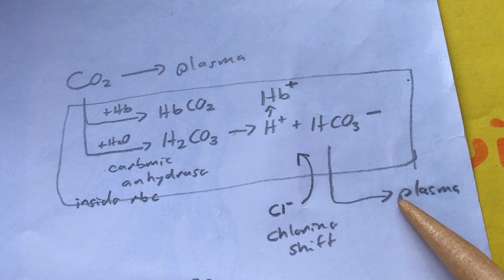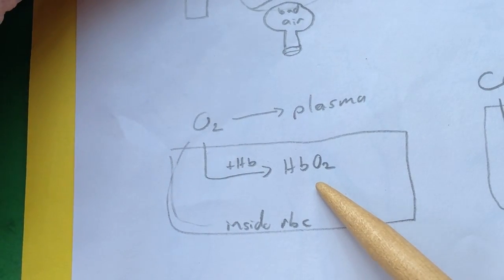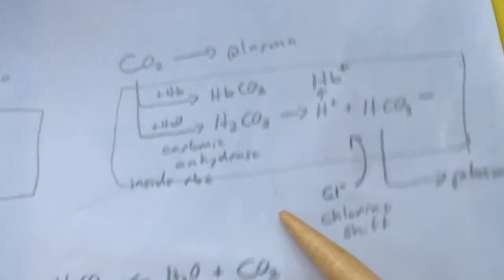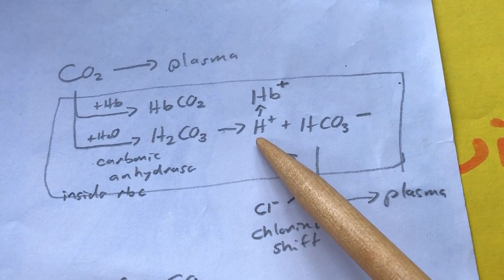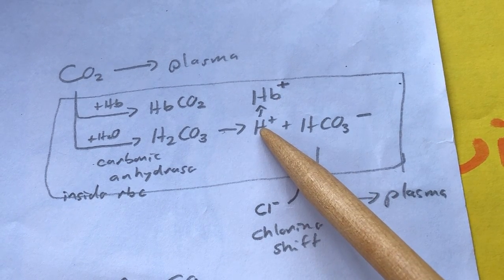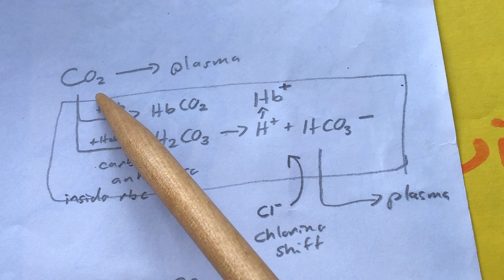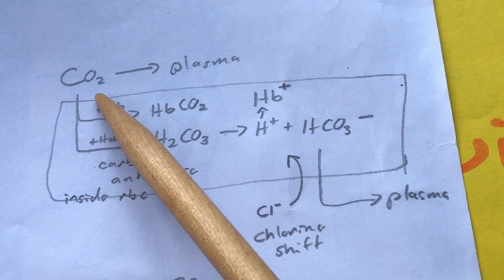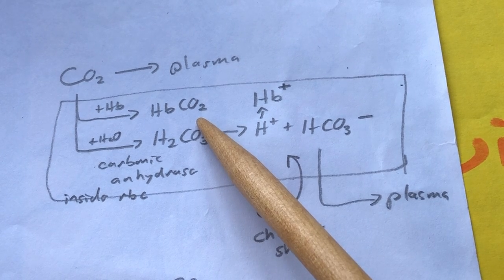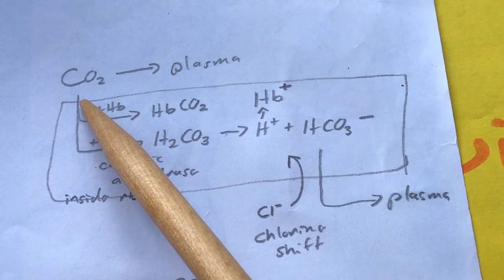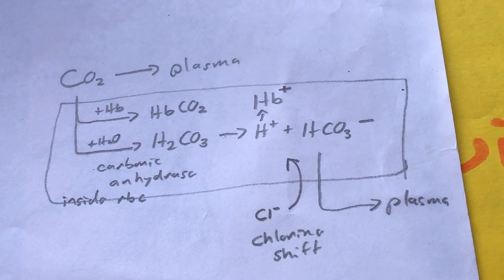These reactions are all reversible, which is particularly important for carbon dioxide. The bicarbonate from the plasma can get back inside the red blood cell, combine with the hydrogen ion released from hemoglobin, and make carbonic acid, which then dissociates into H2O and CO2. The CO2 is then available to diffuse out of the blood and into the air space. Likewise, the carbaminohemoglobin can dissociate and release CO2, which diffuses into the alveoli. Any CO2 dissolved directly in the plasma can also diffuse out into the air spaces.